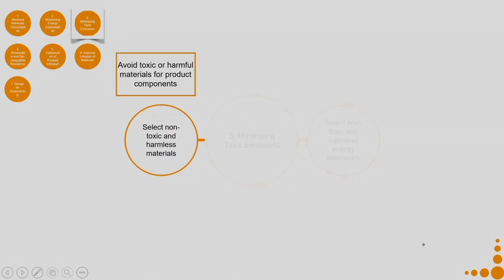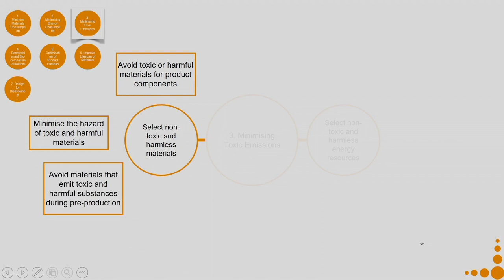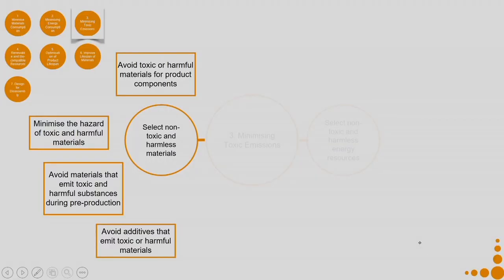Select energy resources that reduce dangerous emissions during pre-production, distribution, and usage. For selecting non-toxic and harmless materials: avoid toxic or harmful materials for product components, minimize the hazard of toxic and harmful materials, avoid materials that emit toxic and harmful substances during pre-production, and avoid additives that emit toxic or harmful materials. For example, many paints used on interior walls have a tendency to emit certain toxic elements — avoid using such additives and paints.